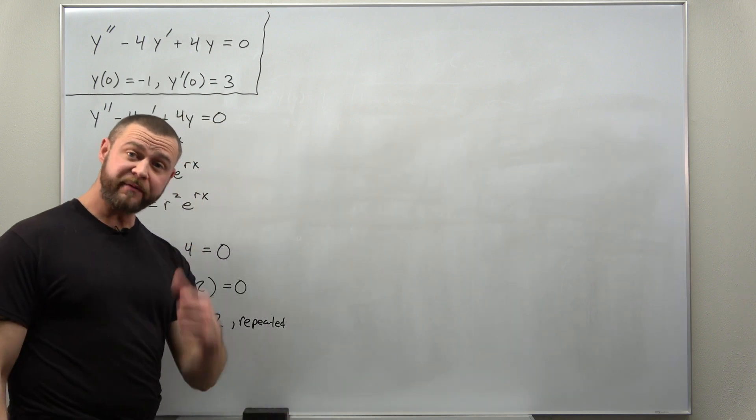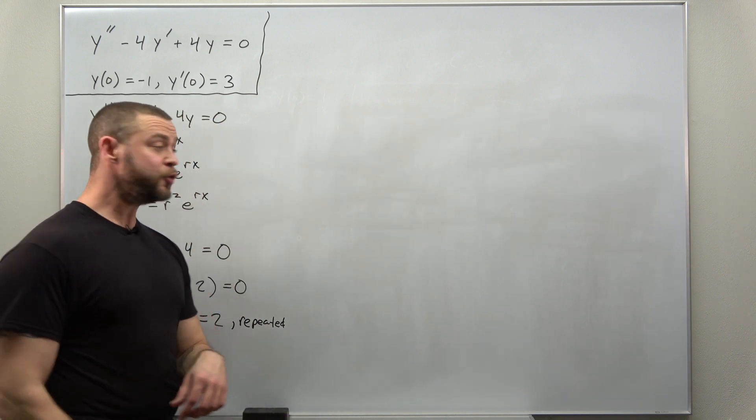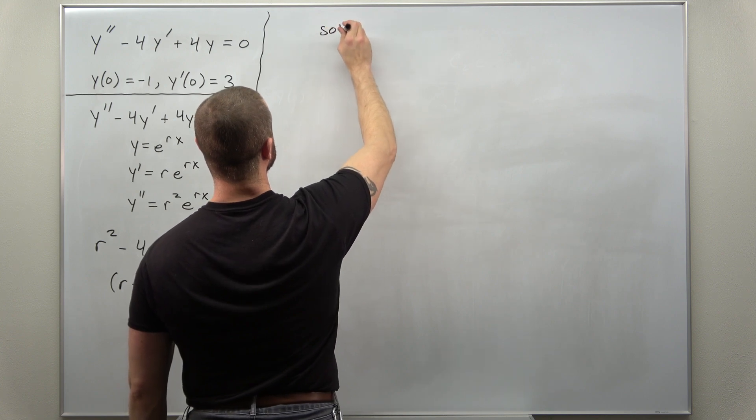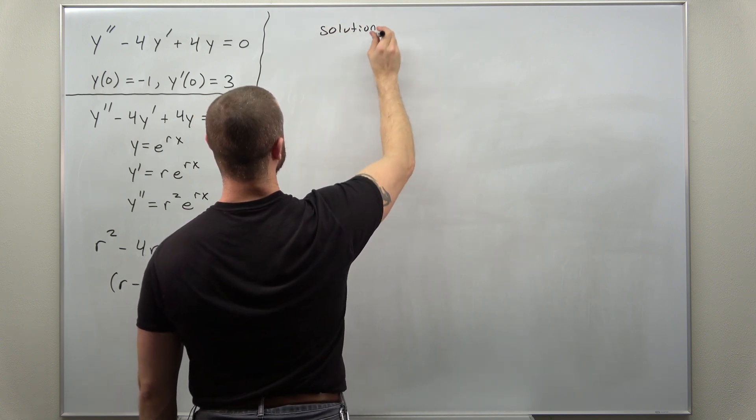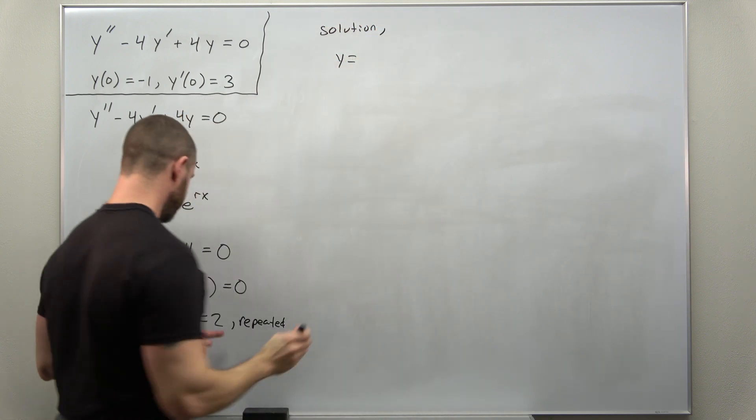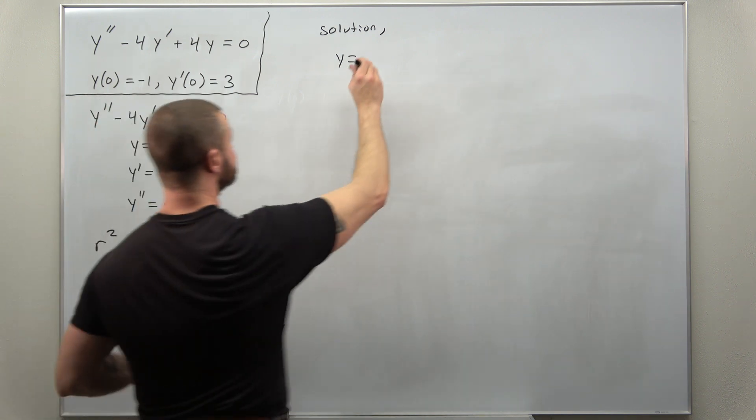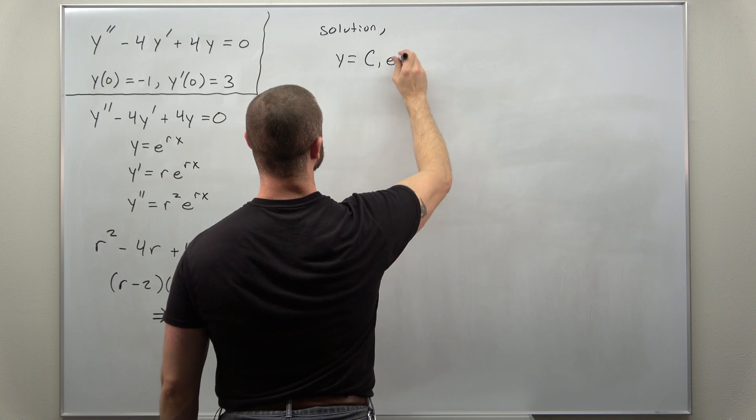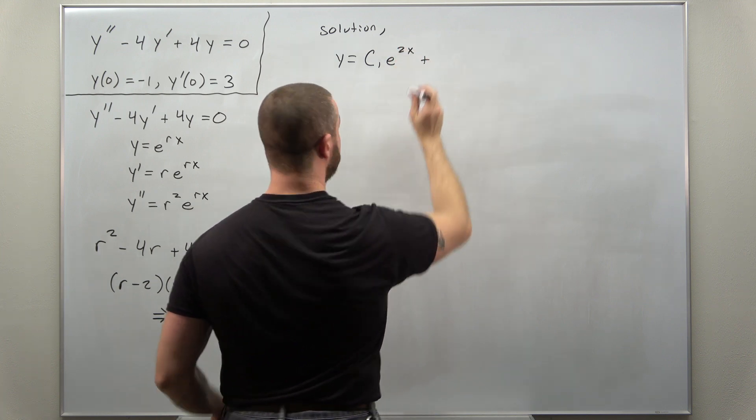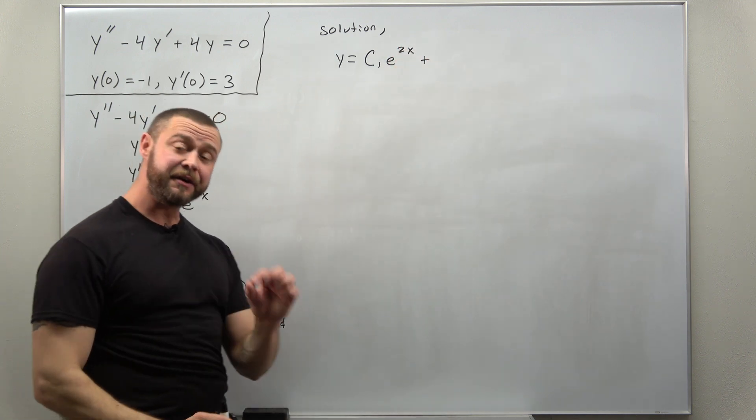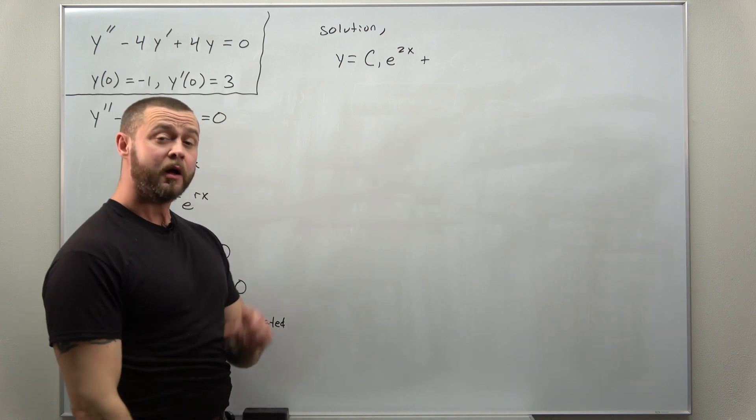Now from a previous video we know the solution in this case. We do get an exponential function for that value of r so we get a e to the 2x.